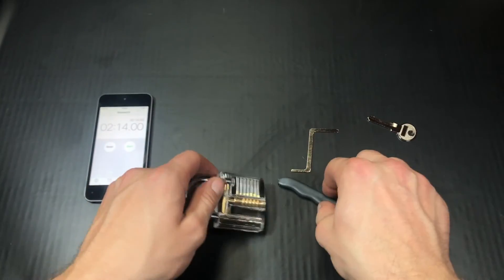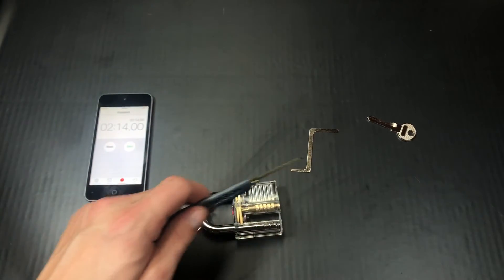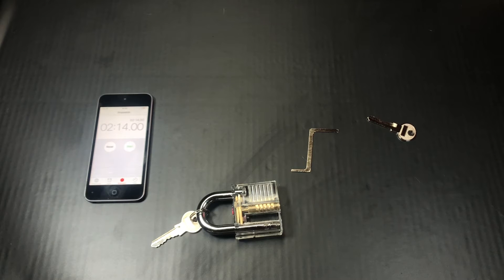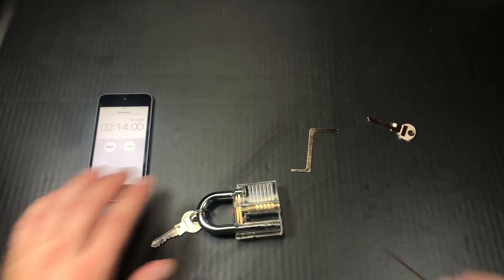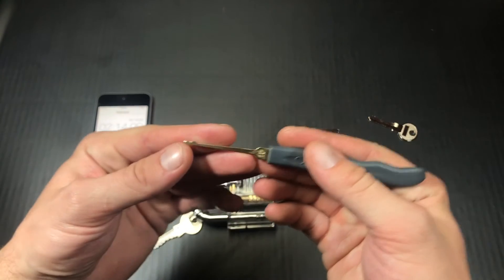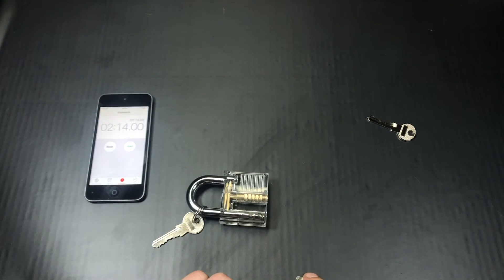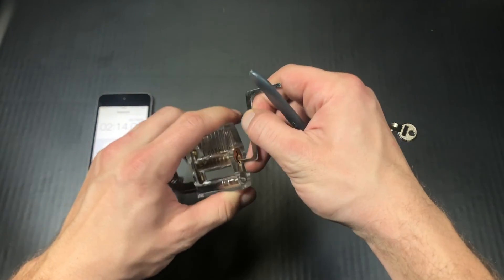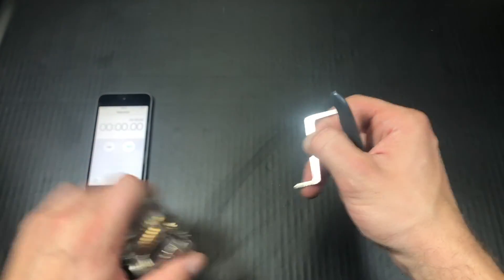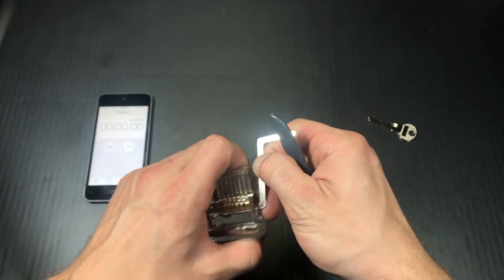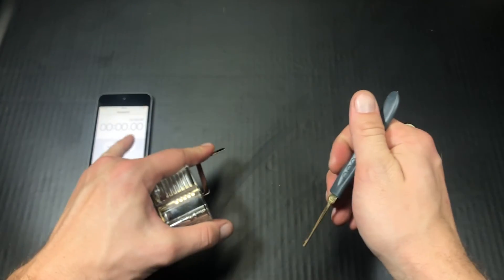So we'll lock it back up and let's try one of the rakes. Let's try, in this set it's number 10. Kind of looks like, I think it's called a snowman or a half snowman. So we'll reset the clock and we'll reset this and start.